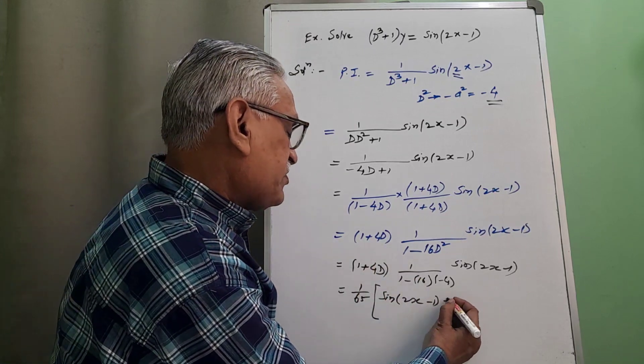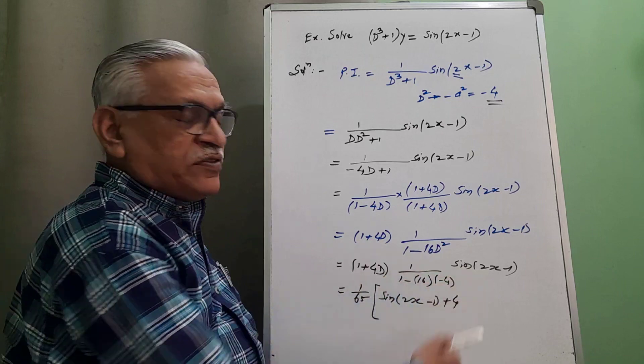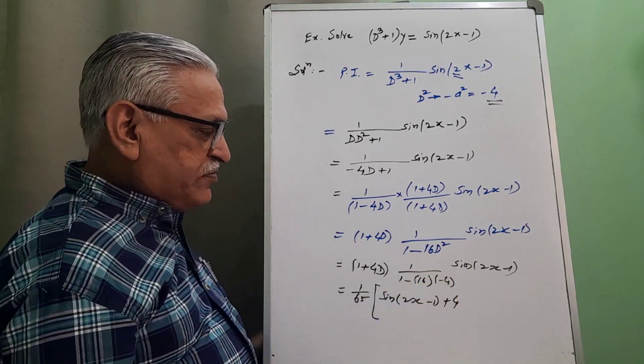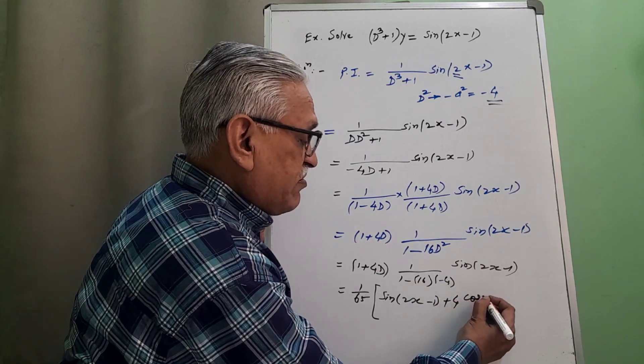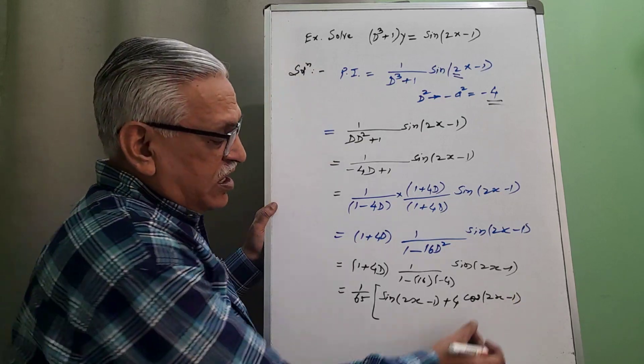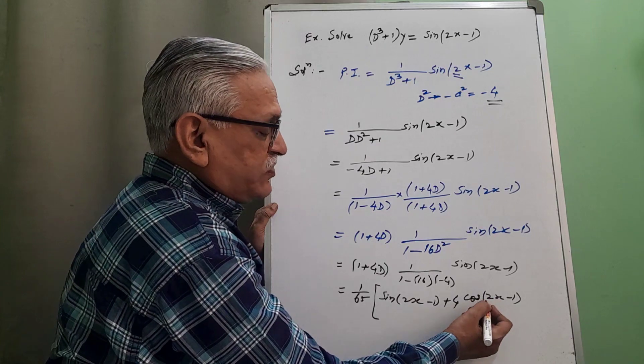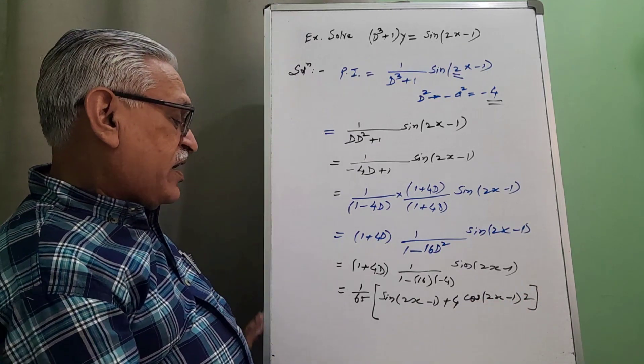Plus 4 times d of this. d stands for derivative, therefore differentiating this sin term, the derivative of sin is cos, 2x minus 1. Chain rule, differentiating this term with respect to x, the derivative of 2x with respect to x is 2.